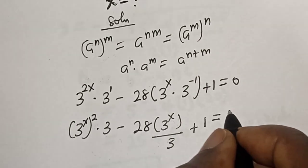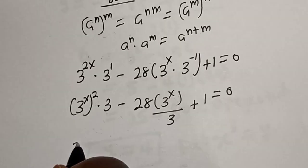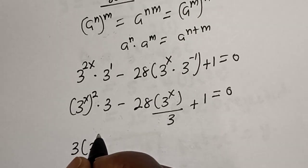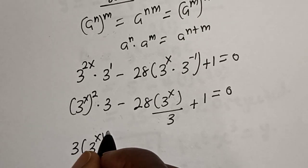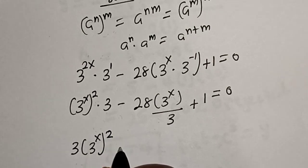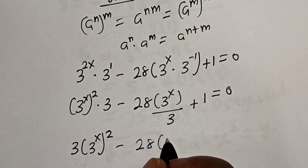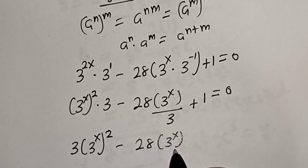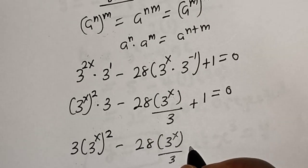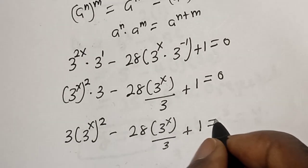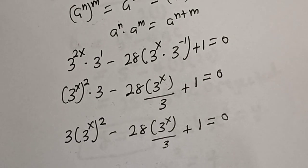Is equal to 0. Then: 3 bracket 3 raised to power s, all squared, minus 28 bracket 3 raised to power s over 3, plus 1, is equal to 0.